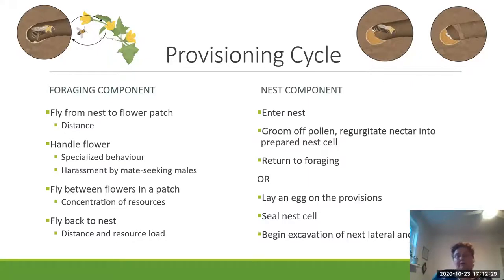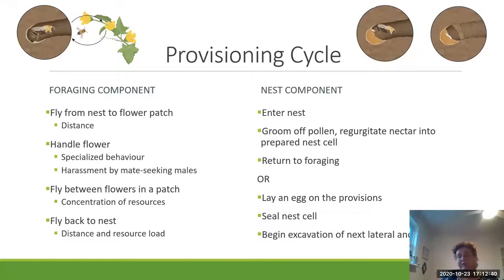The nest component involves them walking into the nest, grooming off their pollen, and regurgitating nectar into the prepared nest cell. Then they return to foraging. Or if their nest cells are full, they have to lay an egg on the provisions, seal the nest cell, and begin excavating the next lateral tunnel and the next nest cell.